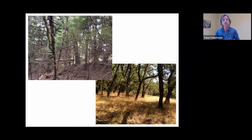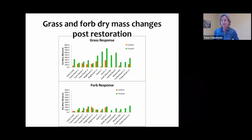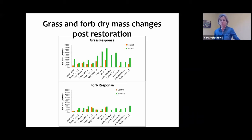These are done with cost share assistance dollars, not on a commercial scale, but they're dense and crowded with Douglas fir. The post-restoration effect really helps show that the grasses are able to reestablish and some of the seed bank is still present. We're able to see a restoration back to a condition that's more like how these stands existed for quite a long time. What we want to show here is both the grass and the forb community — that whole other group of herbaceous plants — and how their dry mass changes post restoration.